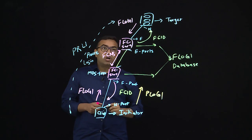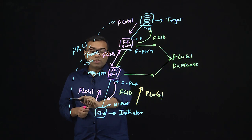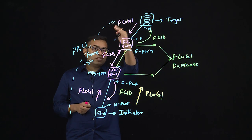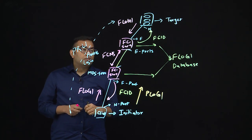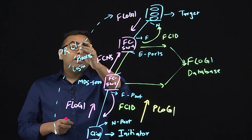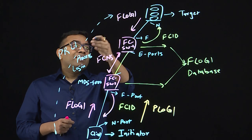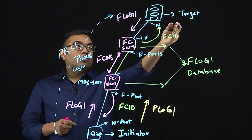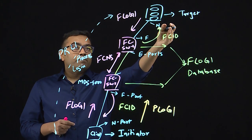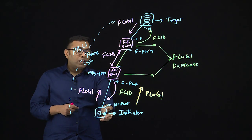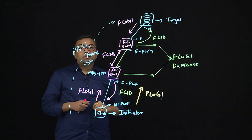The process login helps initiate the communication between the client and the target. These steps complete the fabric initialization process in a Fiber Channel based fabric between the initiator and the target. Once the PRLI is initiated, based on the configured LUN (logical unit number) on the target and the permissions, the response is provided back to the client, and the client can then access the storage drives.